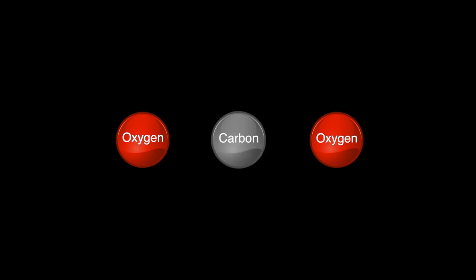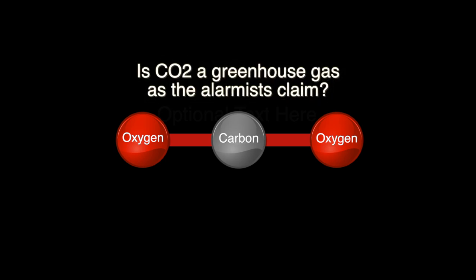We're going to talk about atoms and molecules, but don't worry — it's really simple and we're not going to use any big words. CO2 consists of two oxygen atoms and of course a carbon atom. So the three atoms are joined together to form the CO2 molecule. So is CO2 a greenhouse gas as claimed by the alarmists? Well the answer is yes, it is.